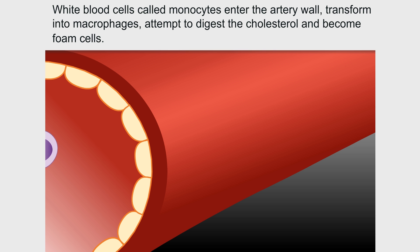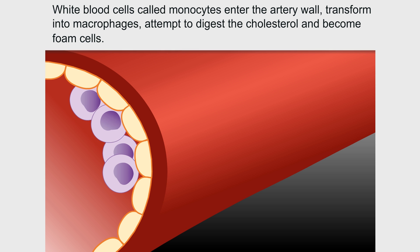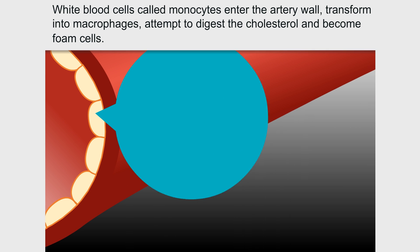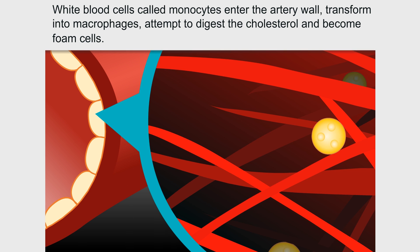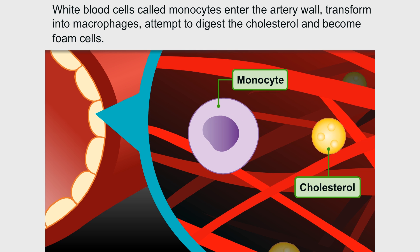White blood cells, called monocytes, enter the artery wall, transform into macrophages, and attempt to digest the cholesterol and become foam cells.